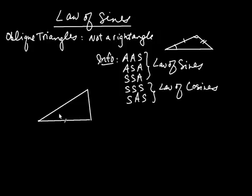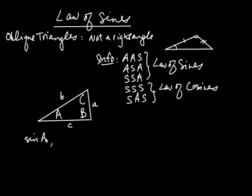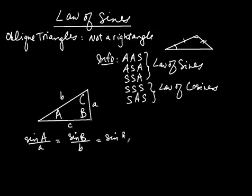So what is law of sines? Looking at a triangle where angles are denoted with capital letters A, B, C, and the sides opposite those angles are lowercase a, b, c — law of sines says: sine of A divided by a equals sine of B divided by b, which also equals sine of C divided by c.